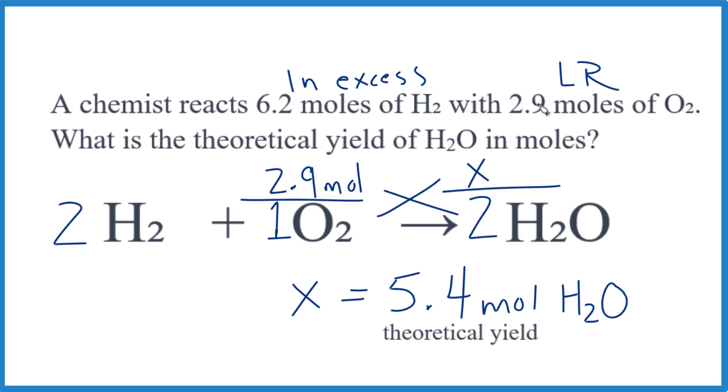We said if we have 2.9 moles of oxygen, 2.9 is to 1 as X is to 2, did the cross multiplication, we found X is 5.4 moles of water.